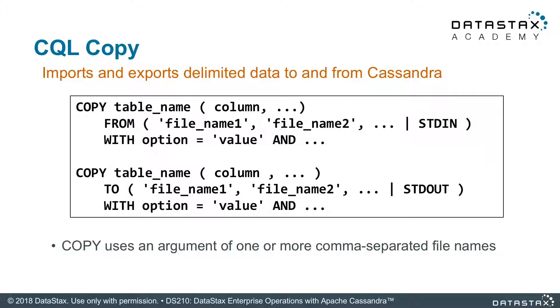Let's talk about CQL Copy, which is a built-in command in Cassandra on the command line. From this example, there are really two ways to go: copy table FROM and copy table TO. This is used to move data in and out of a Cassandra cluster — not just a node, an entire cluster.